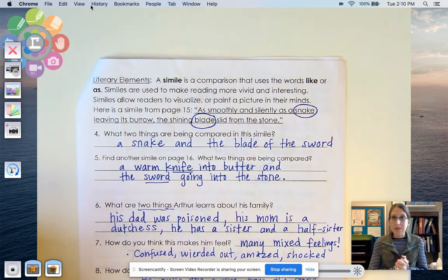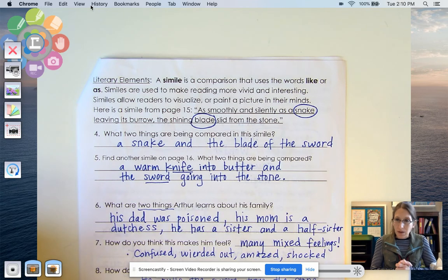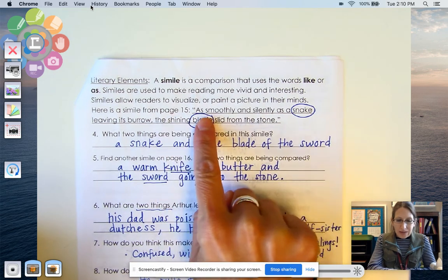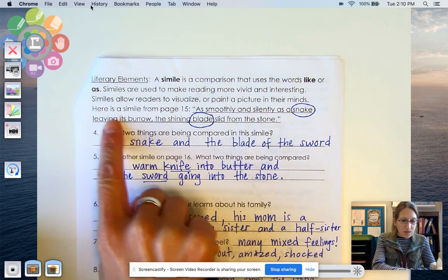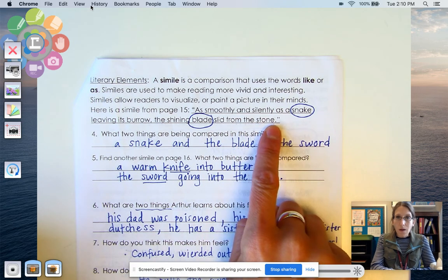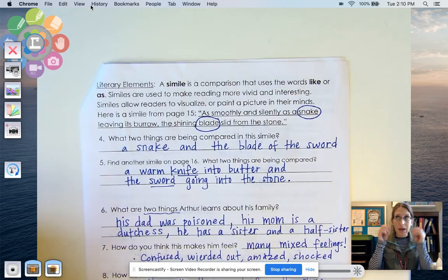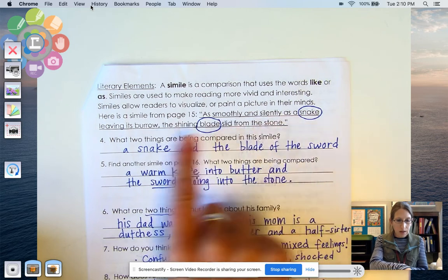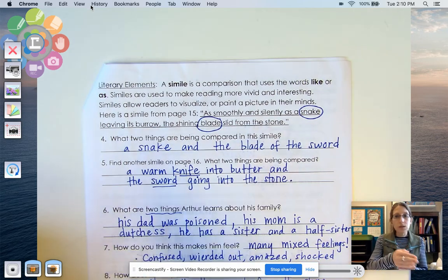So we had a couple of similes here. And a simile is a comparison that uses the words like or as. Similes are used to make reading more vivid and interesting. Similes allow readers to visualize or paint a picture in their minds. Here's a simile from page 15. As smoothly and silently as a snake leaving its burrow, the shining blade slid from the stone. So those are the words the author used to help us as readers to paint a picture and get an idea of what it was like and what it may have looked like when Arthur pulled the sword out. So we can get an idea. Well, I know I can kind of imagine what it's like when a snake leaves its burrow, its little house, its little hole. It's very easy. It just glides right out.